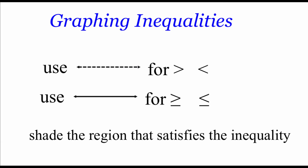When we're graphing inequalities, it's a lot like graphing an equation, except we're going to use a dotted line if we've got just a plain greater than or less than symbol. If we've got a greater than or equal to or less than or equal to, we're going to use a solid line, and then we have to shade the region that satisfies our inequality.